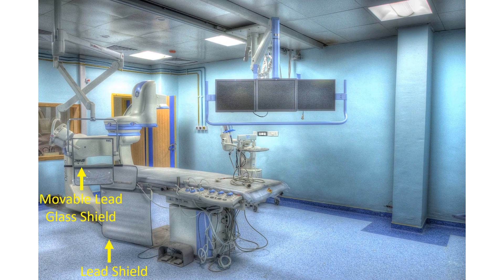Personnel inside the cath lab have full radiation protection gear including a lead apron, thyroid shield, lead goggles, and radiation protection cap. A radiation monitoring badge is also used to assess the cumulative monthly dose.